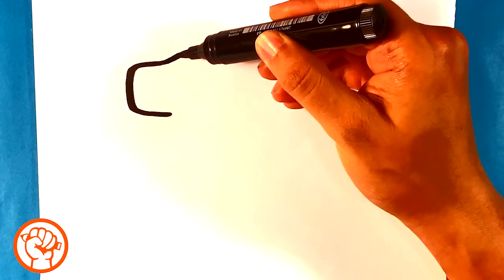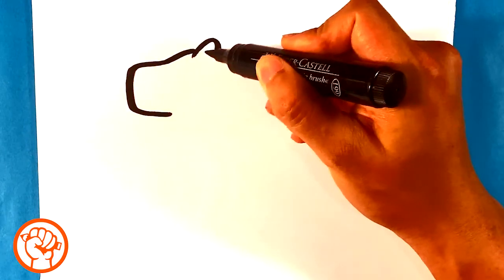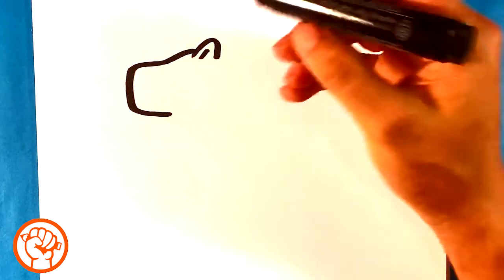Alrighty, pulling up into the top of his head here. I'm gonna throw some small ears over here. A little line I draw here in the back.